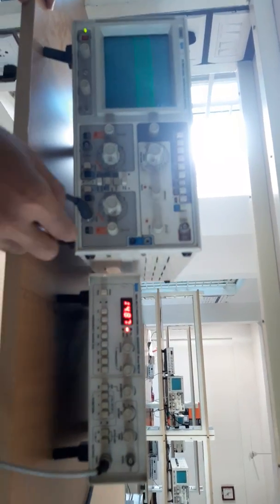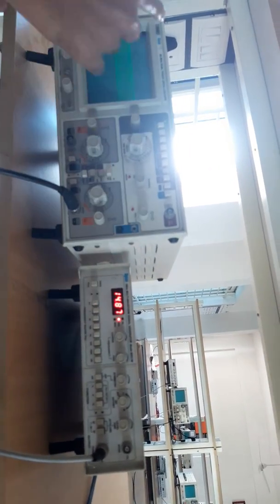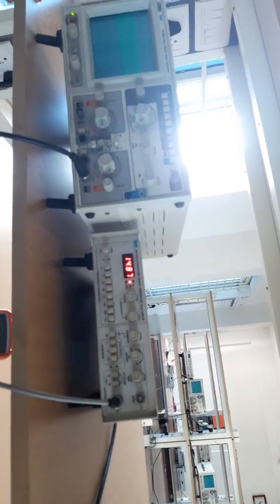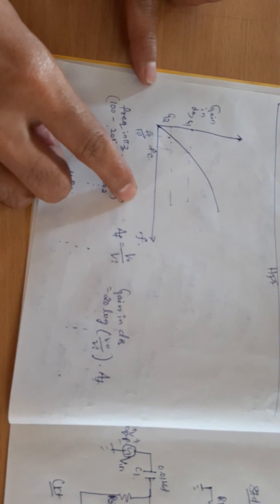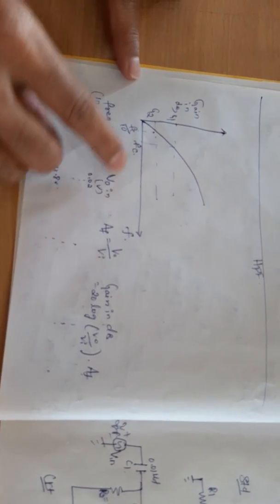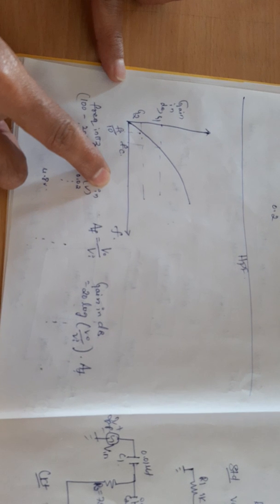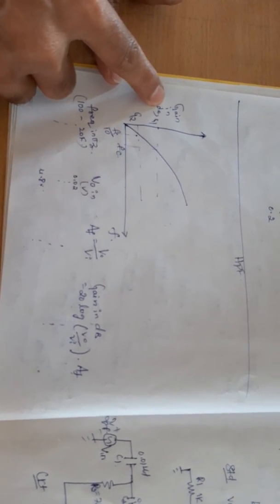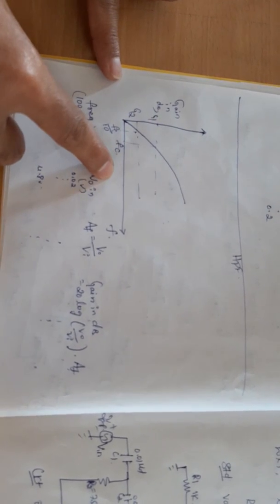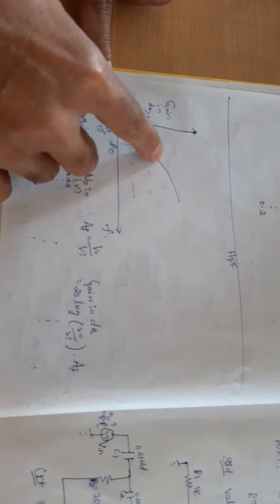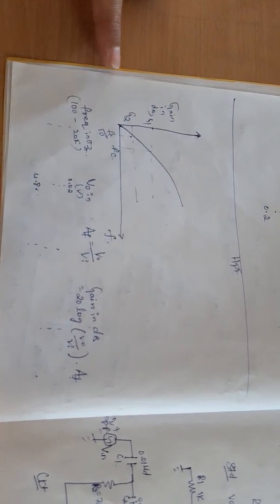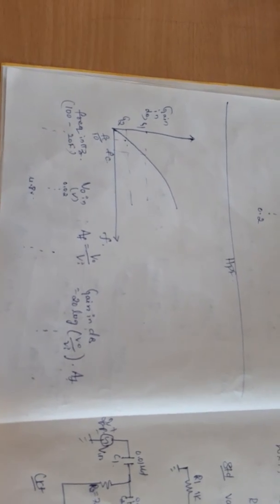We can vary the frequency and note down different values of gain. Coming to the graph, similar to low pass filter we have plotted gain versus frequency. Gain is on the y-axis and frequency is on the x-axis. At a certain point, the gain becomes constant.